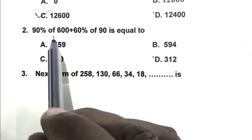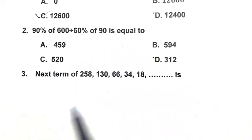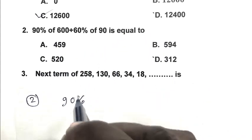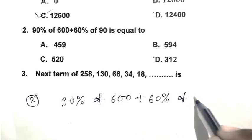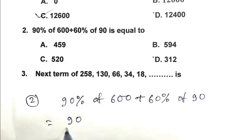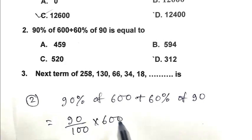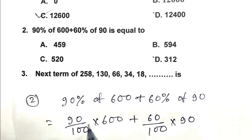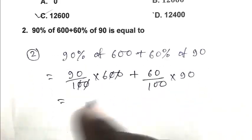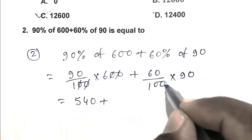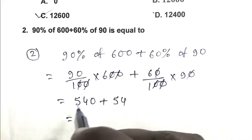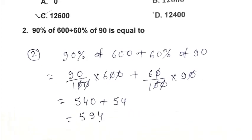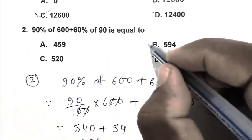Question number 2. 90% of 600 plus 60% of 90. So write it 90 upon 100 multiplied by 600 plus 60 upon 100 multiplied by 90. So it's become 540 plus 54. That is 594. So B is the right answer.